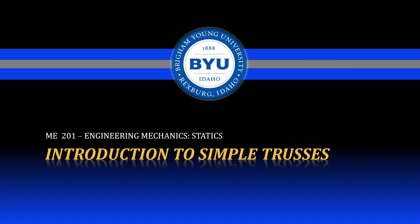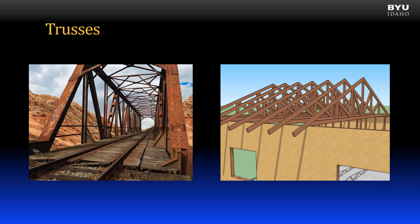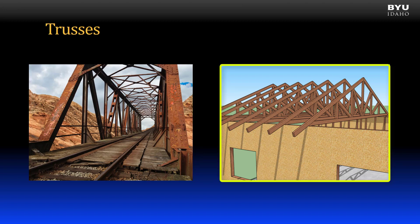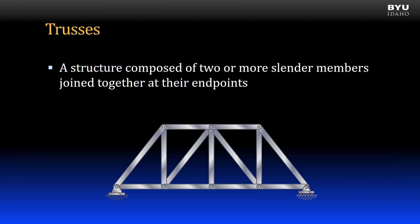Welcome to Statics. Introduction to simple trusses. A truss is a certain type of structure. Train and other vehicle bridges can often be classified as trusses. The structures that support the sloped roofs of wood-framed residential buildings are typically referred to as roof trusses. A truss can be defined as a structure composed of two or more slender members joined together at their endpoints.